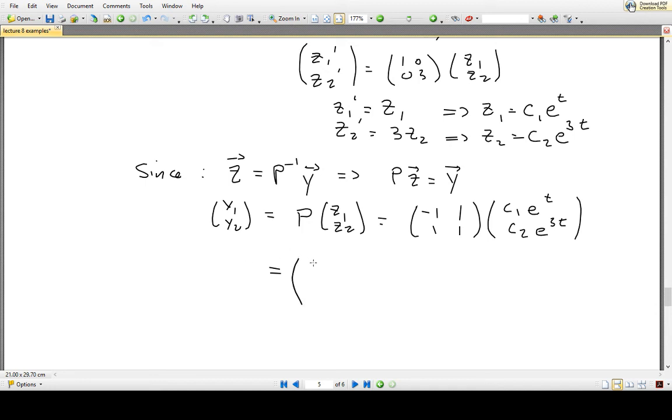C2 e to the 3t minus C1 e to the t, and C1 e to the t plus C2 e to the 3t. And that gives us our solution Y1 and Y2.